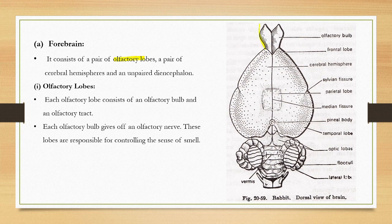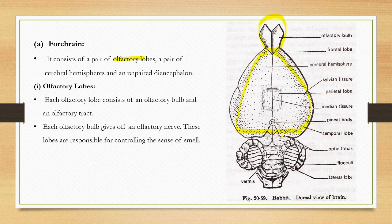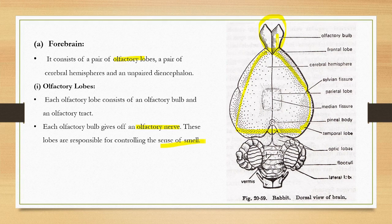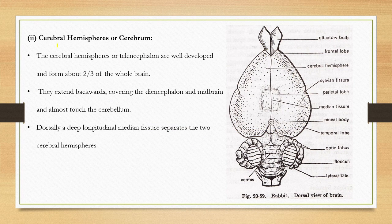The forebrain consists of olfactory lobes — a pair of cerebral hemispheres and an unpaired diencephalon, which can be seen on the ventral view. The olfactory lobes consist of an olfactory bulb, an olfactory tract, and a ventral cellular tract. It has a nerve called the olfactory nerve, and its function is the sense of smell.